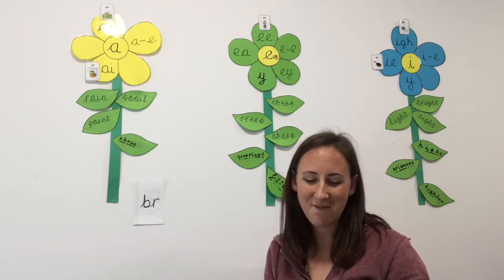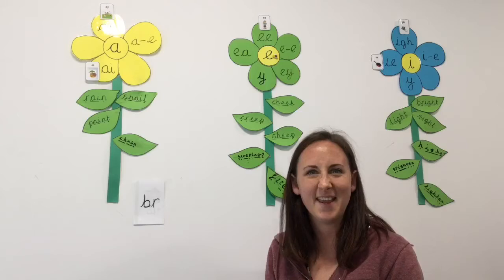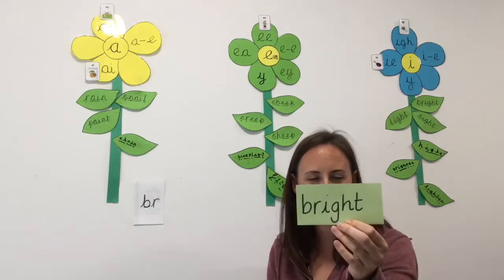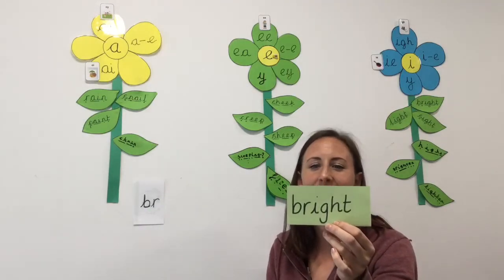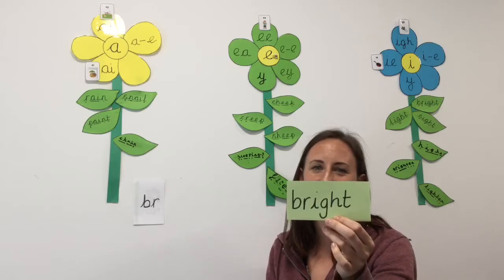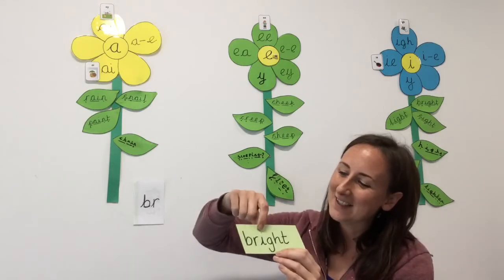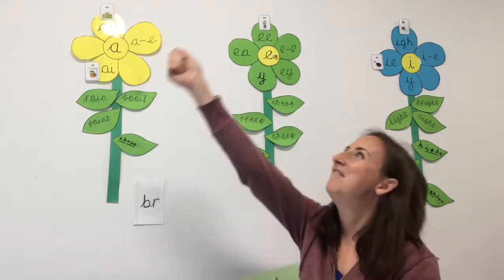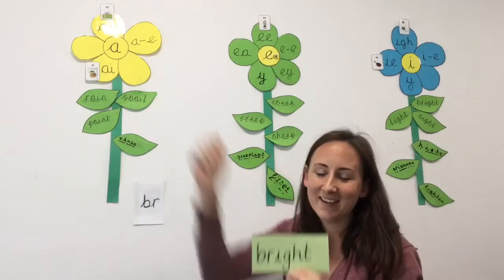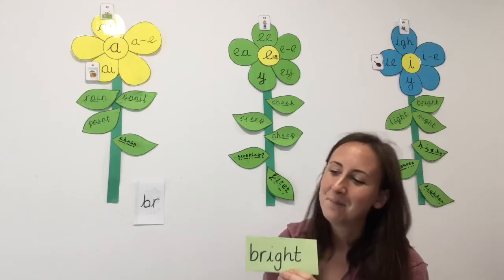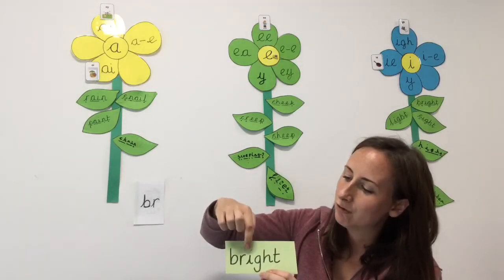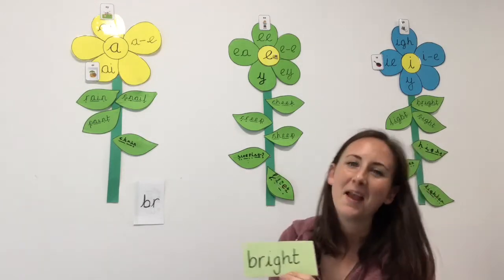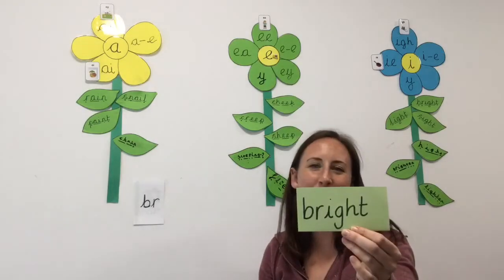So my first word is this. Have a really good look. We've got our trigraph I for fly high. Now let's sound it out together. Bright. My turn bright, your turn.